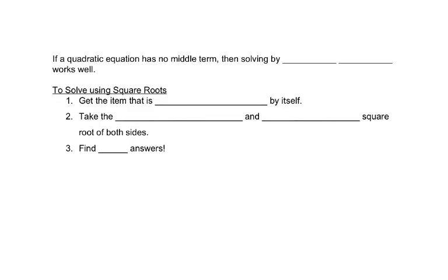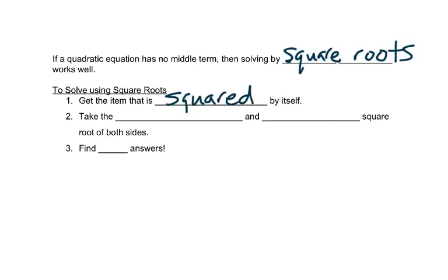If a quadratic equation has no middle term, then solving by square roots works really well. You first get the item that is being squared by itself, then you take the positive and negative square roots of both sides to find two answers. Here, x² is already by itself.